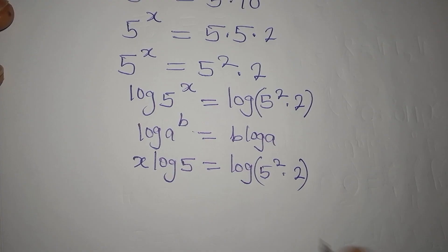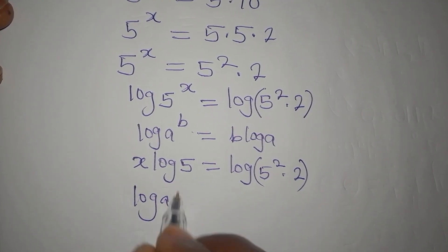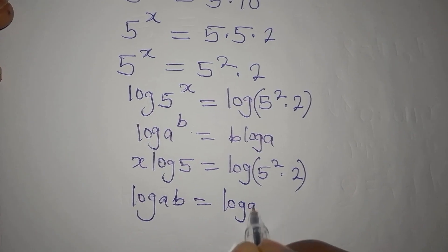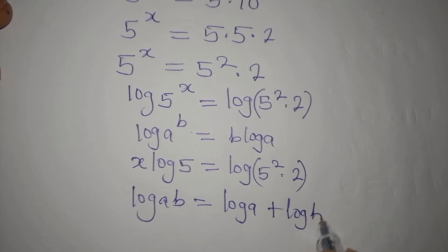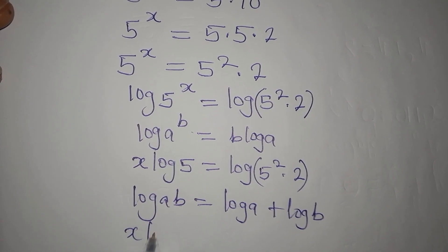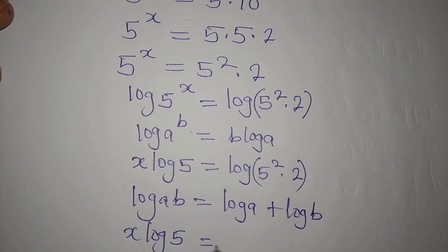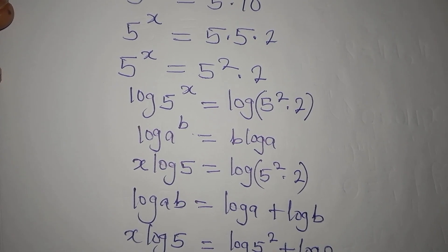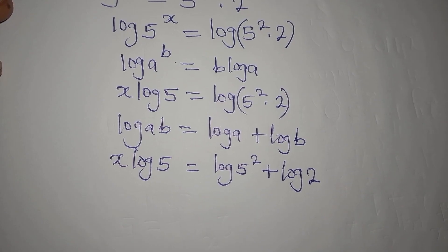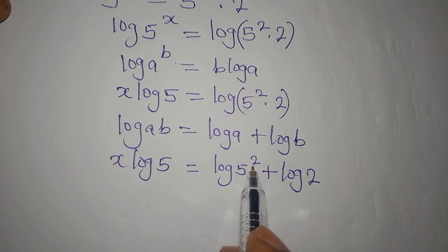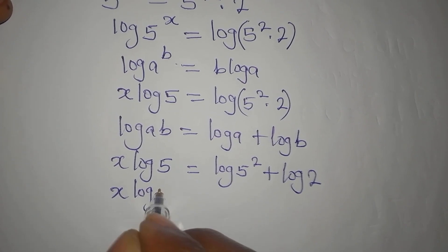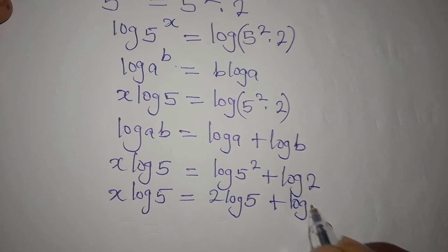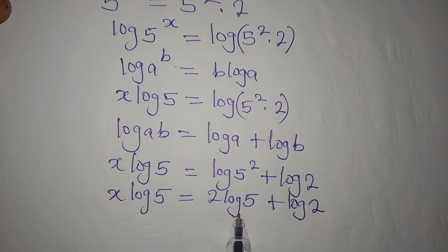Since we are multiplying inside the log, we apply the product rule: log of a times b equals log a plus log b. So x log 5 equals log 5 squared plus log 2. The power on 5 squared comes down, giving us x log 5 equals 2 log 5 plus log 2. We cannot add these two terms because they are not the same log — one is log 5 and the other is log 2.